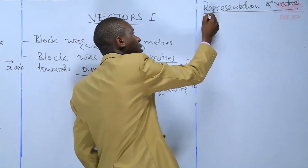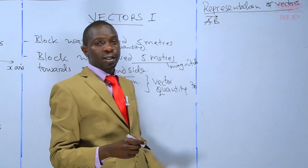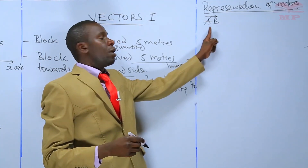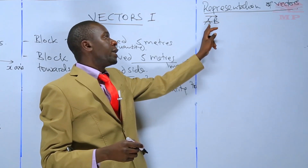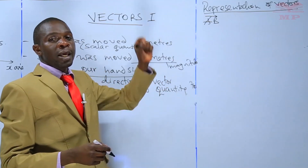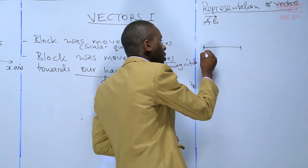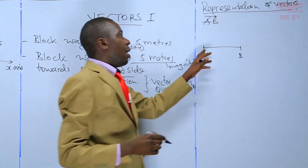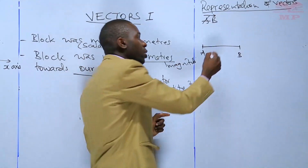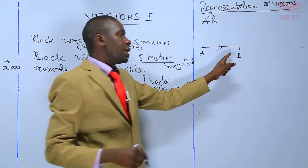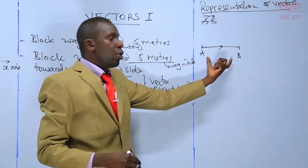You can represent a vector as vector AB in that direction, using two capital letters. This tells us that the length of the vector is between point A and point B, and the direction is from A towards B. We show that direction with an arrow, so this vector is represented as vector AB.